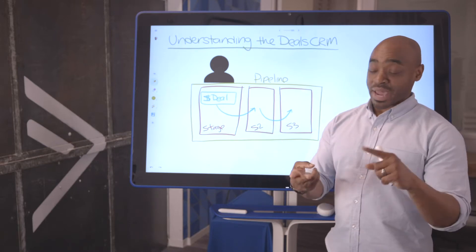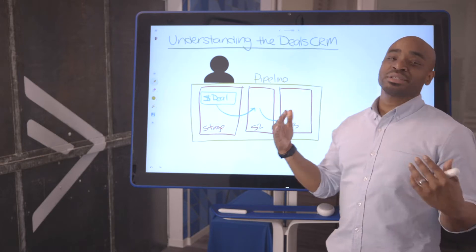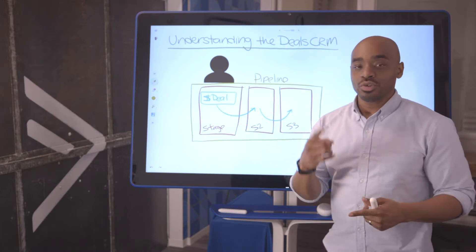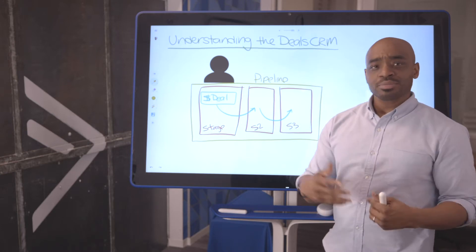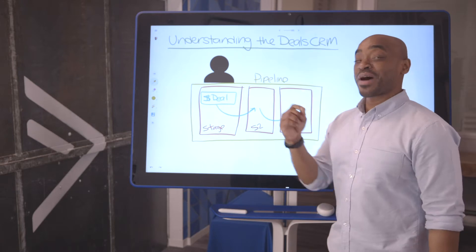They ship physical products and they use stages to identify where the package is. Has the order been placed? Has the package been shipped? Has the package been received? There are endless possibilities with our deal CRM since we don't mandate you use it just one way.